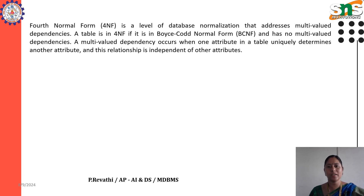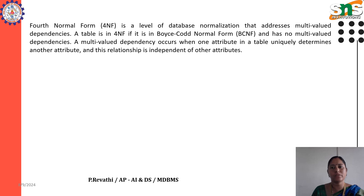4th Normal Form is a level of database normalization that addresses multi-value dependencies. A table is in 4th Normal Form and has no multi-value dependencies. A multi-value dependency occurs when one attribute in a table uniquely determines another attribute, and this relationship is independent of other attributes.